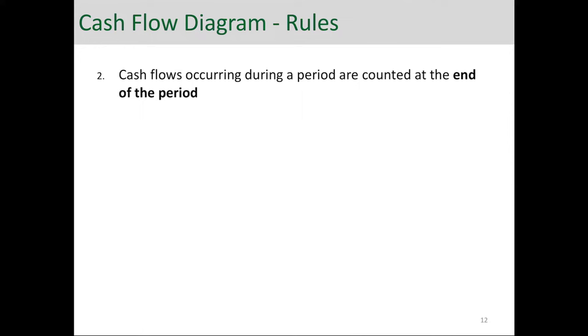The second rule is cash flows occurring during a period are counted at the end of the period. So essentially any cash flow that we're working with are end of the period cash flows. So this is end of year one or this is end of year three and so forth.